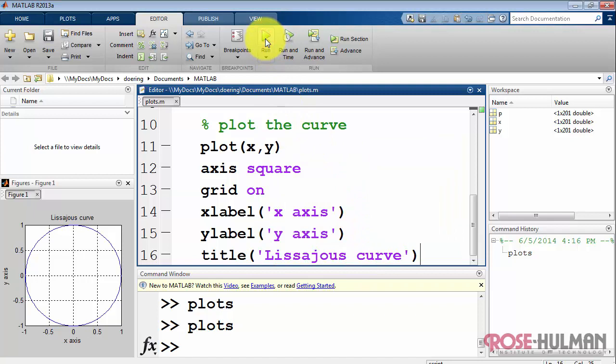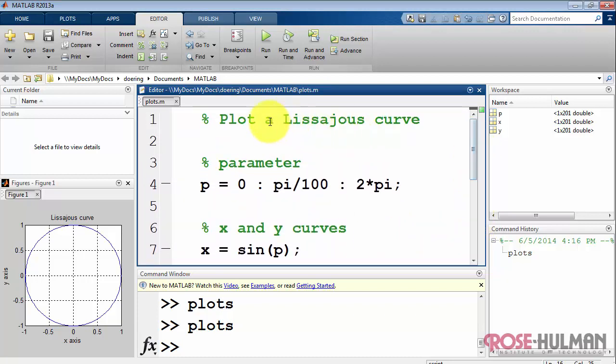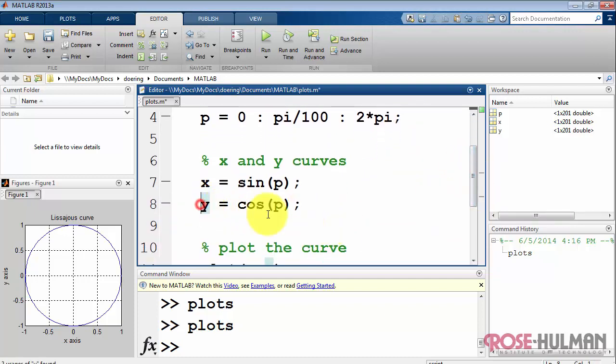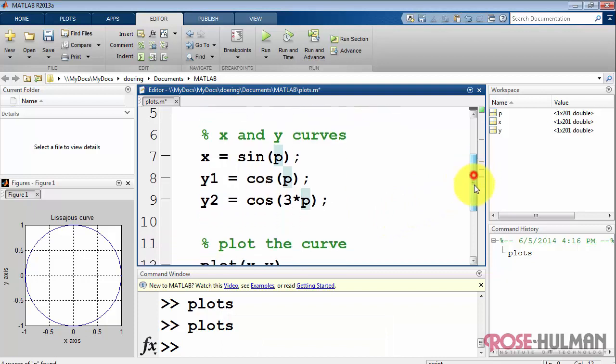Alright, that looks good. Let me show you how you can add additional curves to a given plot. There's two ways of doing this. Let me first begin by defining an additional dependent variable. So call the original one y1 and the new dependent variable y2.